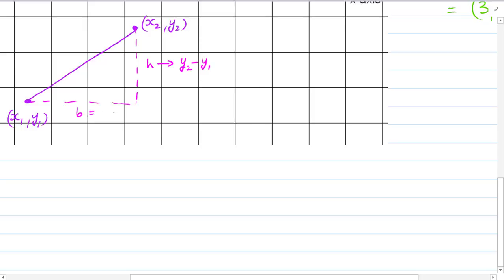So it's y2 minus y1. And the base is the difference in x values. So it's x2 minus x1. So now we have this. The length L fits into this formula. L squared equals b squared plus h squared. That's Pythagoras Theorem.